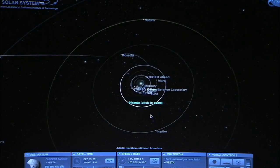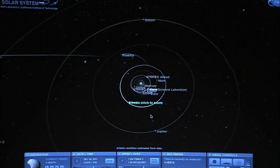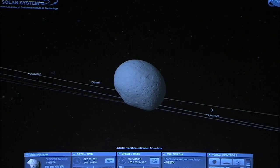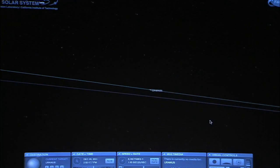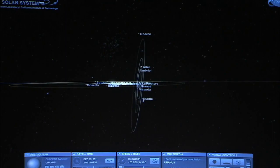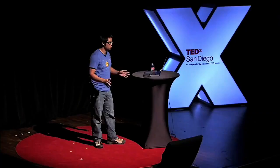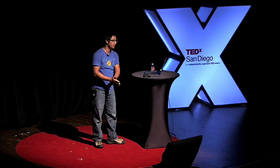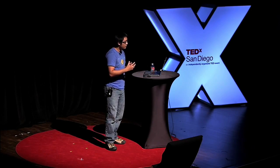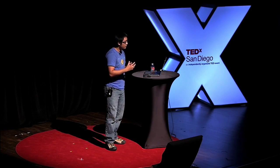If you want to visit anything, all you need to do is double-click. So I'm going to double-click on Vesta, and here we have Dawn orbiting Vesta — and this is happening right now. I'm going to double-click on Uranus, and we can see Uranus rotating on its side along with its moons. You can see how it's tilted at about 89 degrees. We have data from 1950 to 2050, and just being able to visit different places and go through different times, you can explore this for literally hours on end.